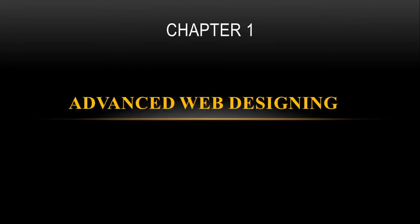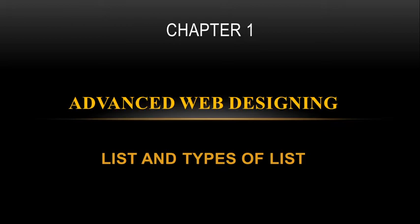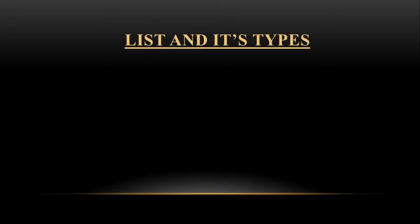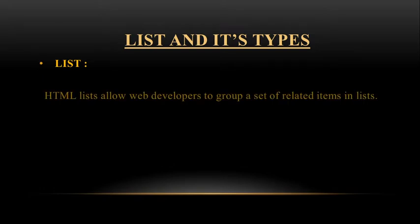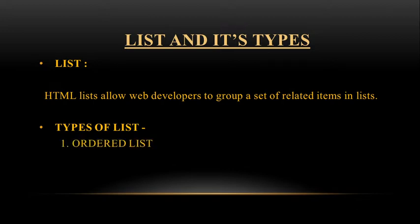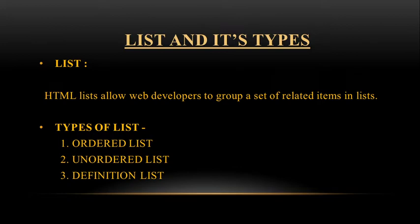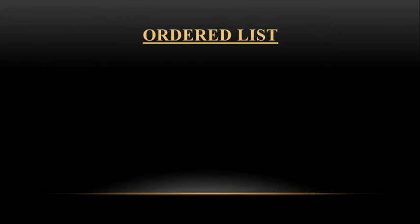Hello everyone, today we start the next topic of advanced web designing: lists and types of lists. As we already learned lists in the 11th standard, now we again study lists in HTML5 where some different attributes are used. HTML lists allow web developers to group a set of related items. There are three types of list: ordered list, unordered list, and definition list.